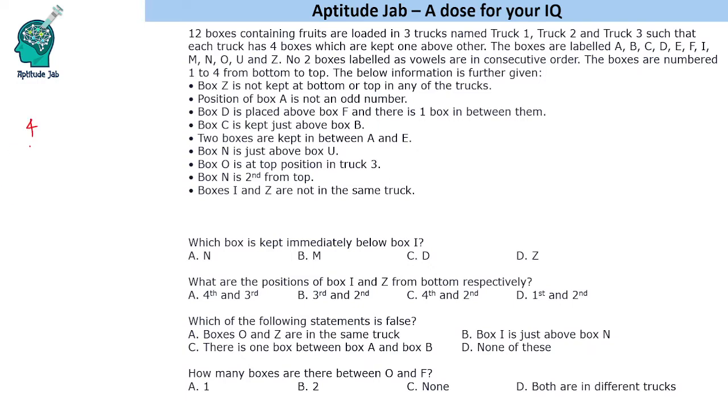We will make arrangement like this 4, 3, 2, 1 and there are 3 trucks. You can call them T1, T2 and T3. It says that we know one concrete information that O is the top position in truck 3.